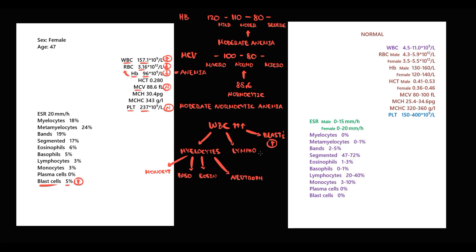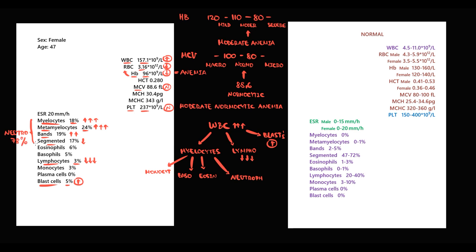Two possibilities remain: lymphocytes or myelocytes. Lymphocytes in this case consist of only three percent of all white blood cells, which is substantially lower than normal, so myelocytes are left. Looking at neutrophils, the percentage of segmented neutrophils is relatively low, but bands are substantially higher than normal; metamyelocytes and myelocytes are also substantially elevated. The total amount of neutrophils is 78 percent of all white blood cells, which is huge. Both basophils and eosinophils are also significantly elevated — a state we call eosinophilic-basophilic association.